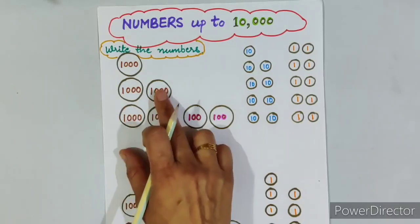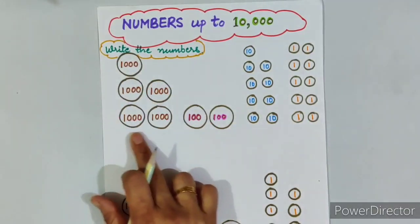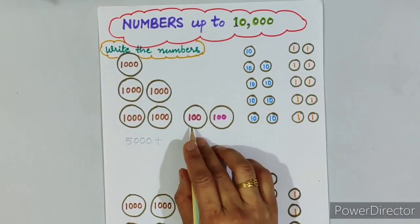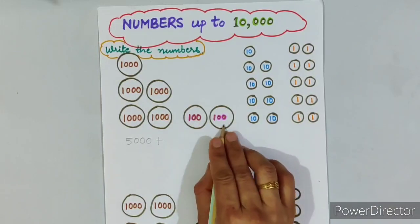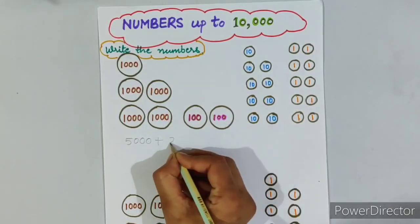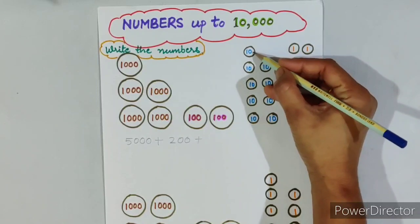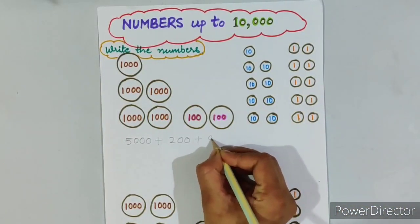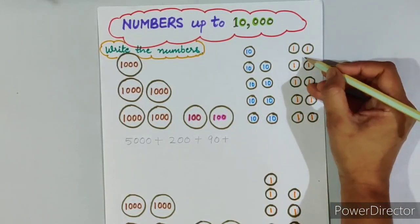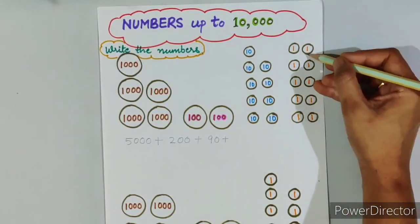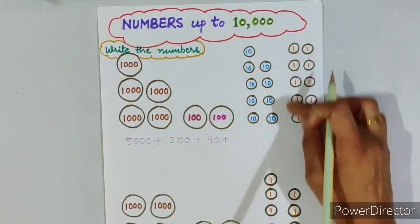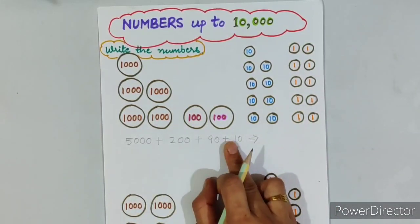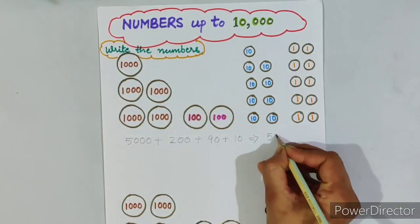Here we have 5 circles of number 1,000. This means the total value of these 5 circles is 5,000. Here we have 2 circles of 100, so the total value is 200. Here we have 9 circles of number 10, so the total value is 90. Here we have 10 circles of number 1, so the total value is 10.